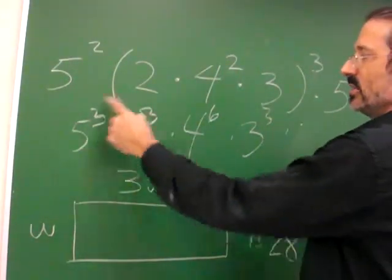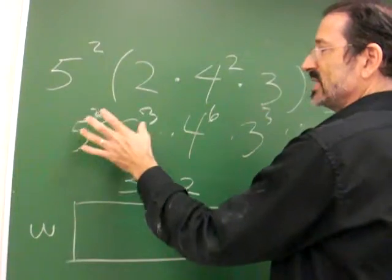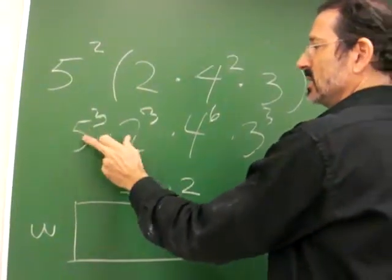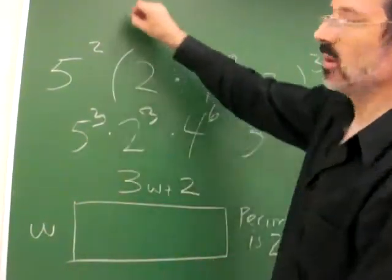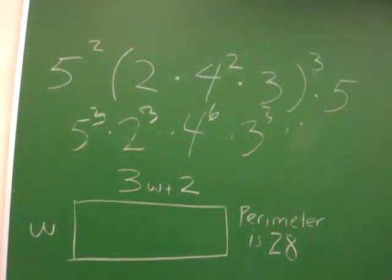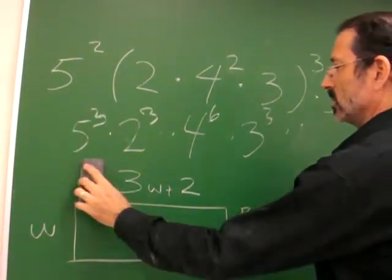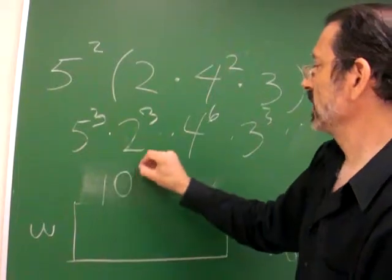Look at all of these 2 times 5. That's 10s. 10, 10, 10. So I'm going to call this, can we call it 10 squared? 10 squared.